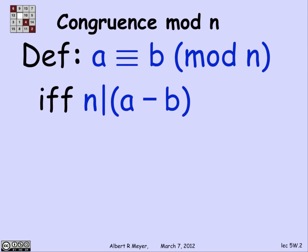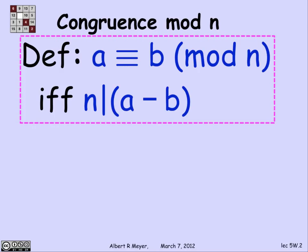It's determined by another parameter n, where n is considered to be greater than 1. All of these, as usual, are integers. The definition is simply that a is congruent to b mod n if n divides a minus b, or a minus b is a multiple of n. That's a key definition to remember. There are other ways to define it — we'll see an equivalent formulation shortly — but this is the standard one.